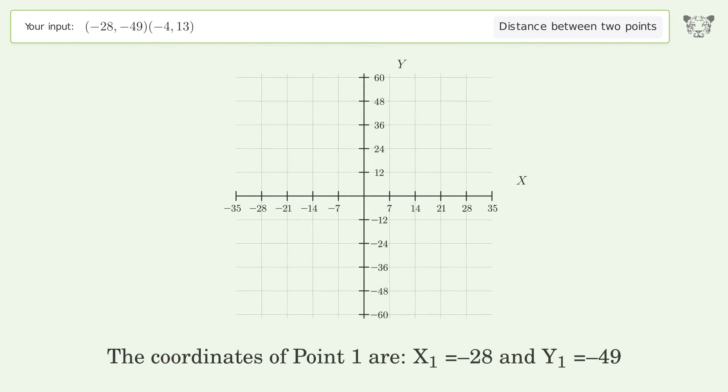The coordinates of point 1 are x1 equals negative 28 and y1 equals negative 49. The coordinates of point 2 are x2 equals negative 4 and y2 equals 13. D is the distance between the two points.